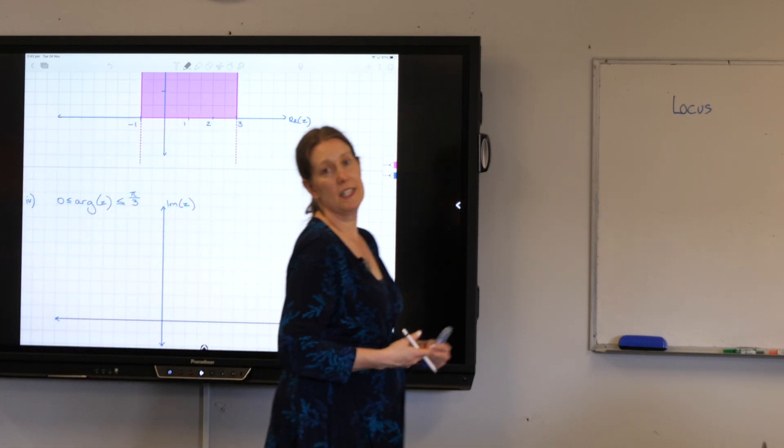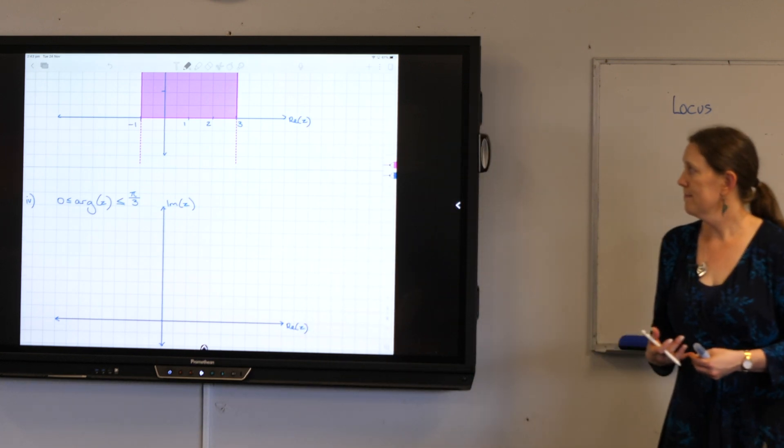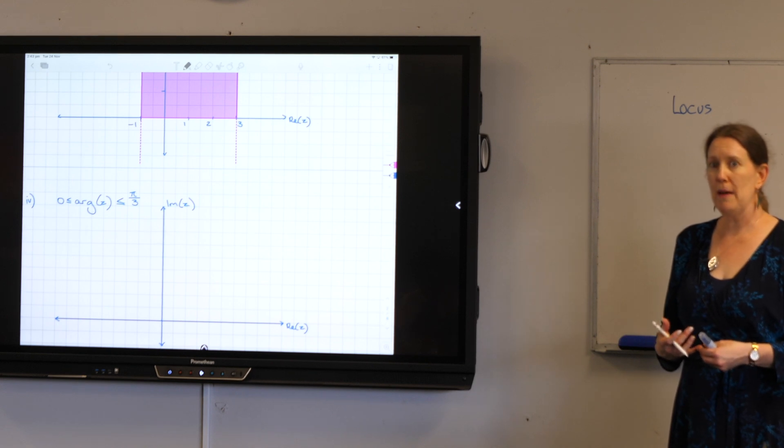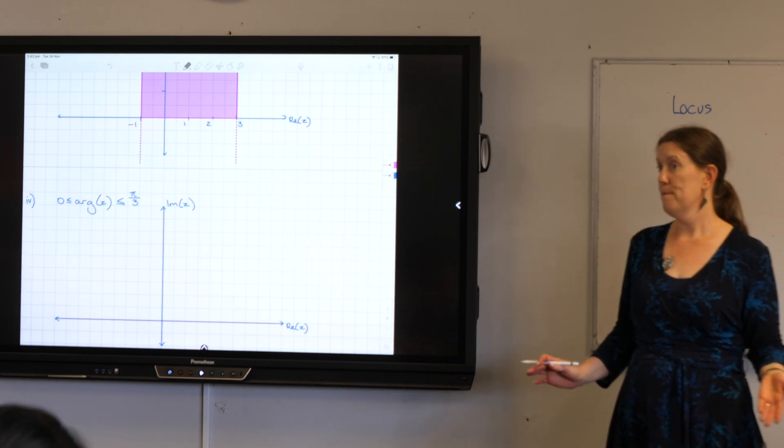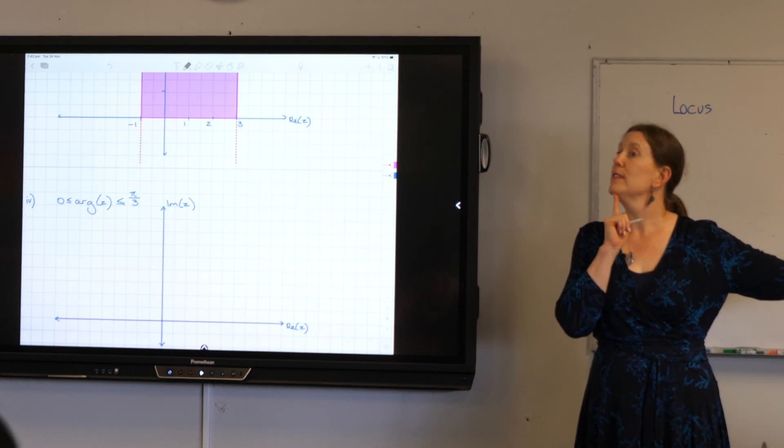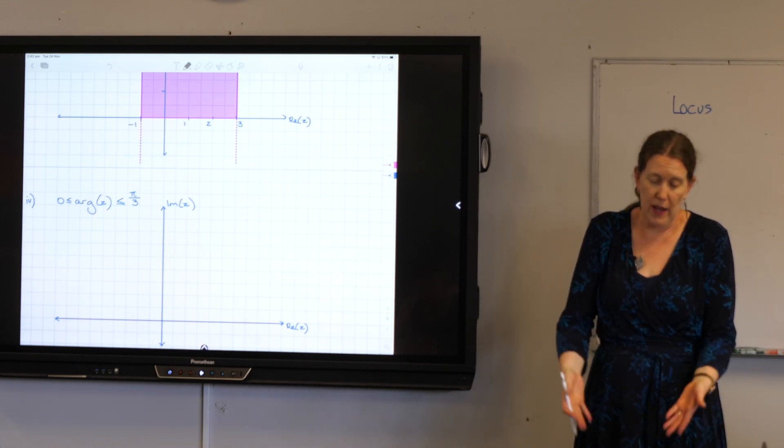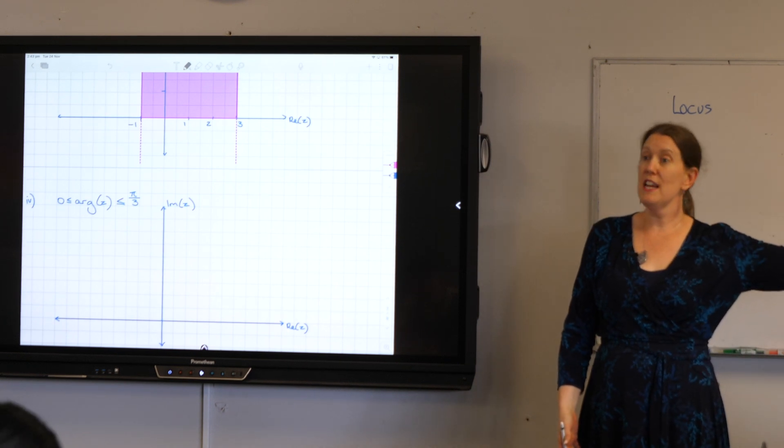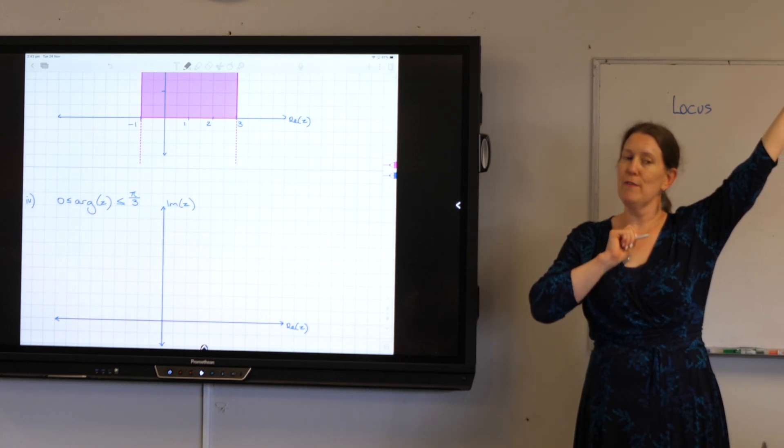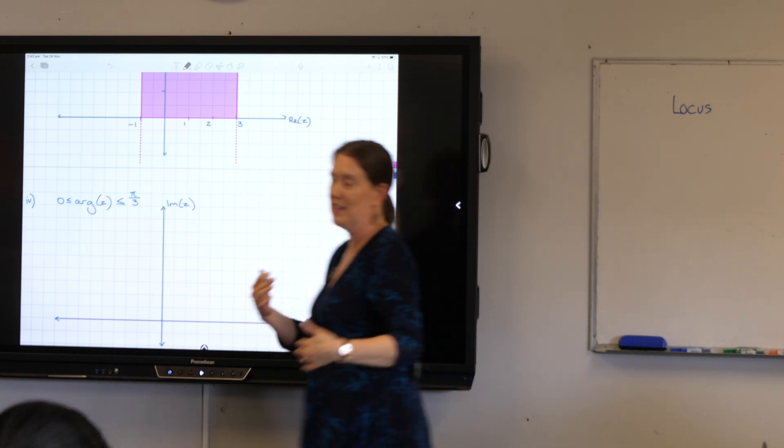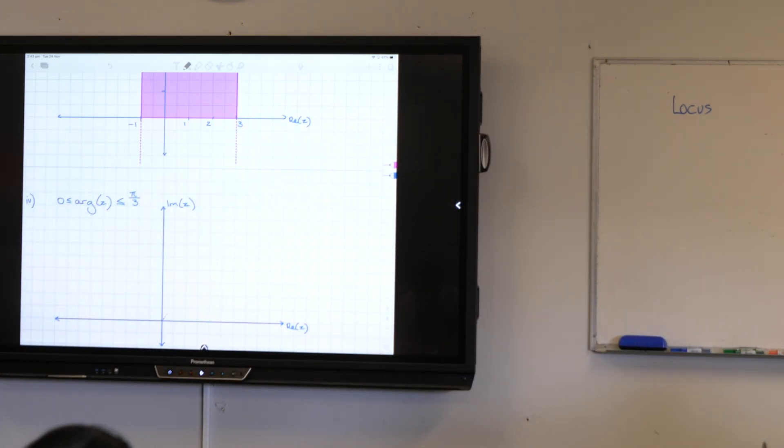All right, now this one is another region. I know this is because it is a greater than and less than. It's talking about the argument. And what do we know the argument is? It is an angle from where? Not just the origin. It's not an angle from the origin because the origin is a point it has no angles. Positive real axis, agreed? And it's a rotation.